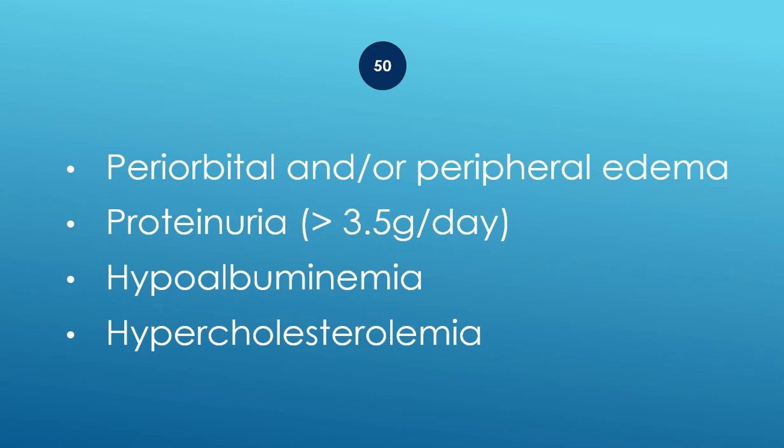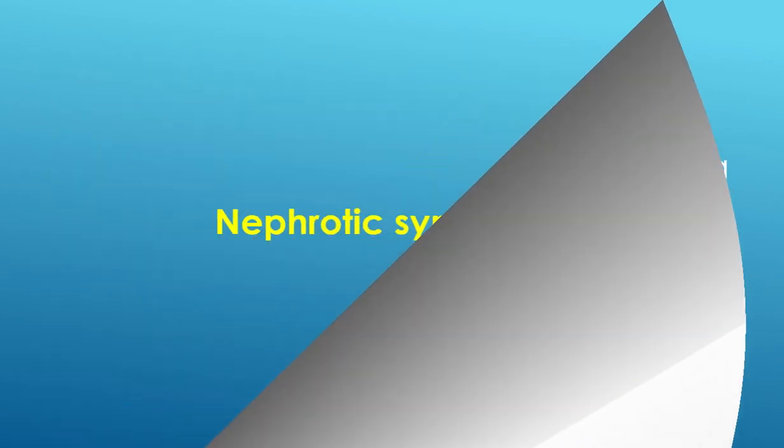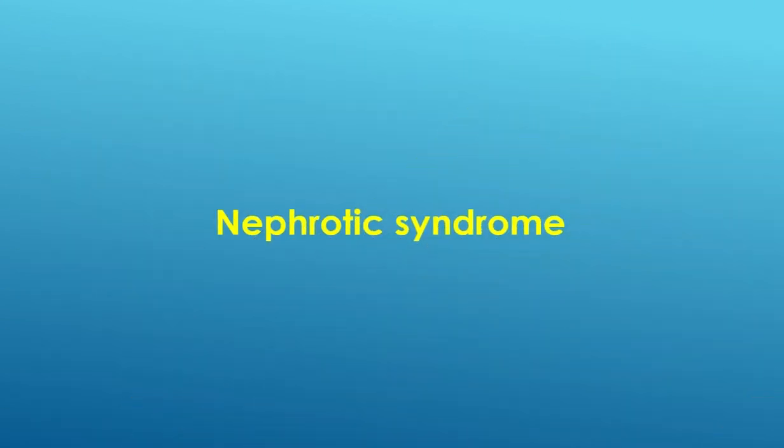Periorbital or peripheral edema, proteinuria greater than 3.5 grams per day, hypoalbuminemia, and hypercholesterolemia — nephrotic syndrome.